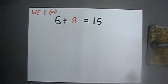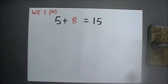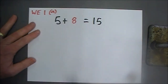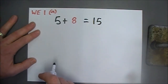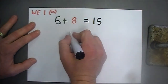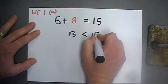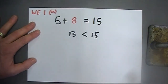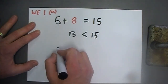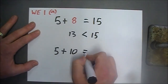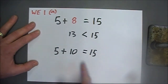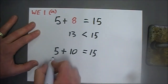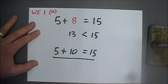Worked Example 1, page 377. The following number sentences are not true. Rewrite each number sentence by changing the coloured number so that you have a true number sentence. For Part A: 5 plus 8 equals 13. We know that 13 is less than 15, so it's not true. This number must increase so we get 15. Therefore 5 plus 10 equals 15, and it's now a true number sentence. This final step is the important part of the working you need to write down.